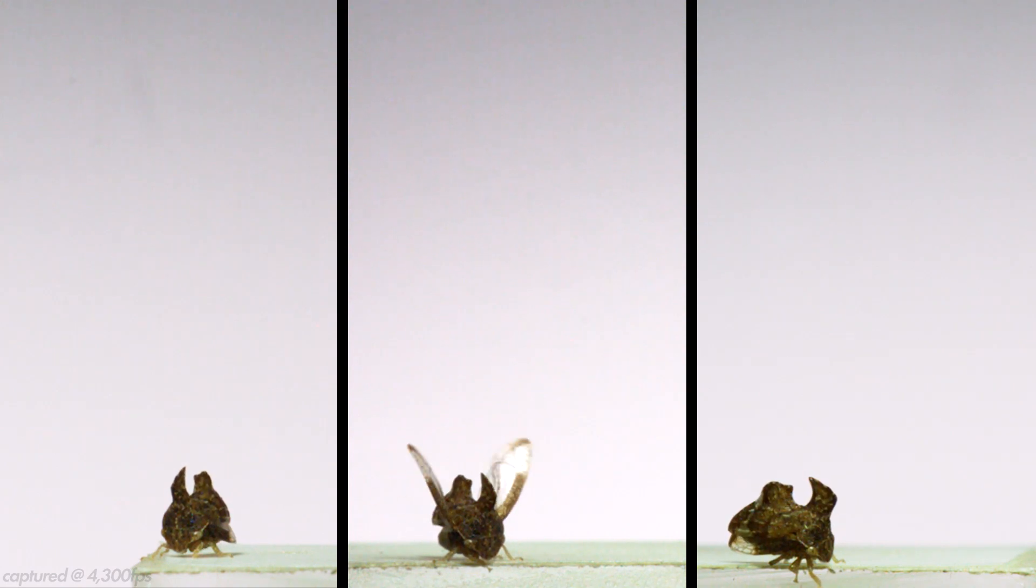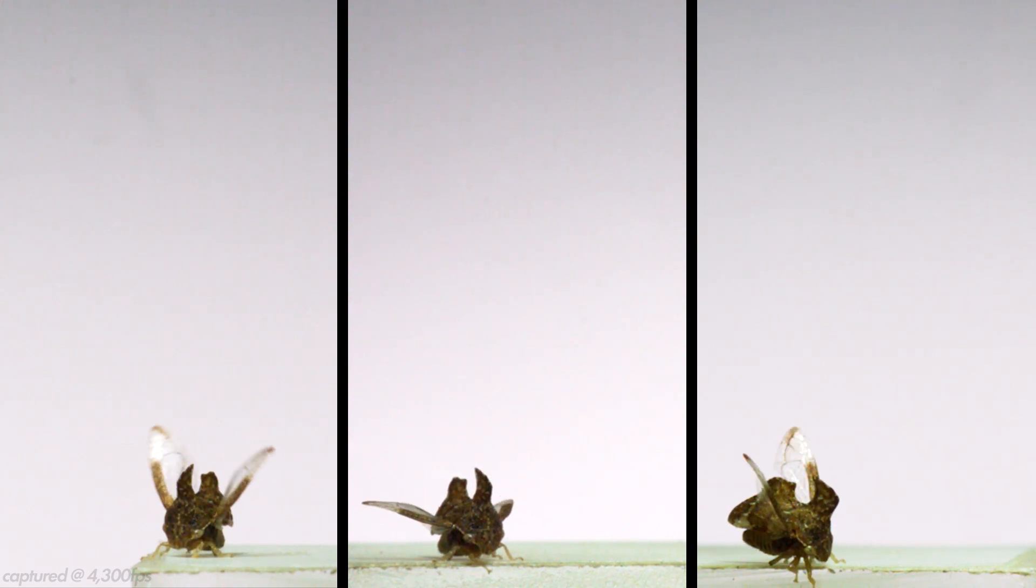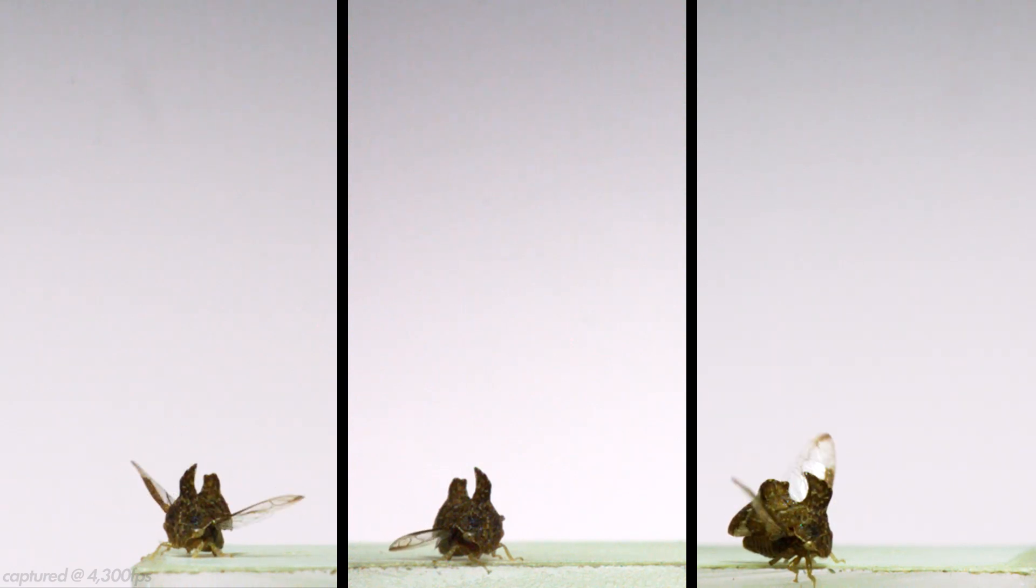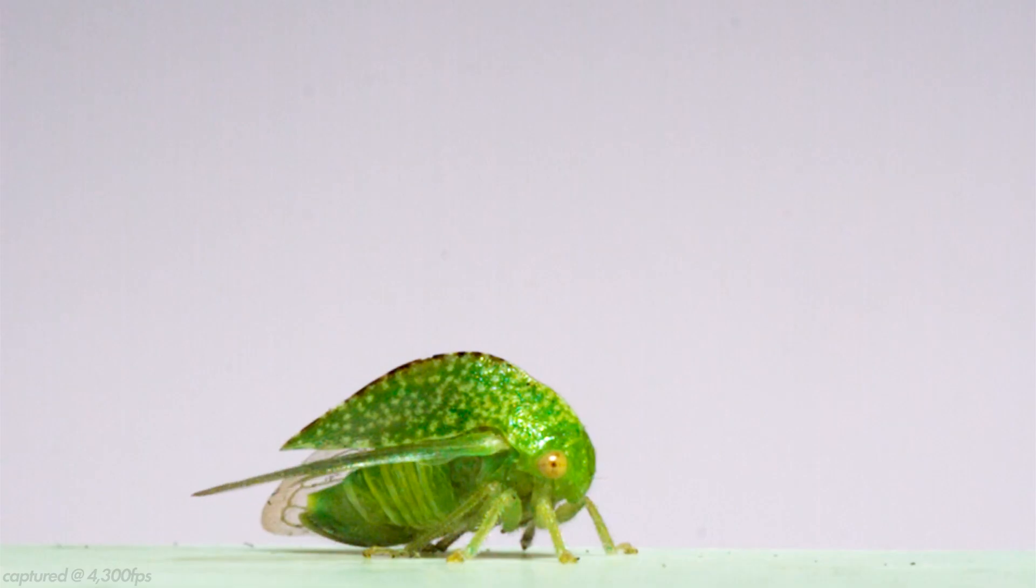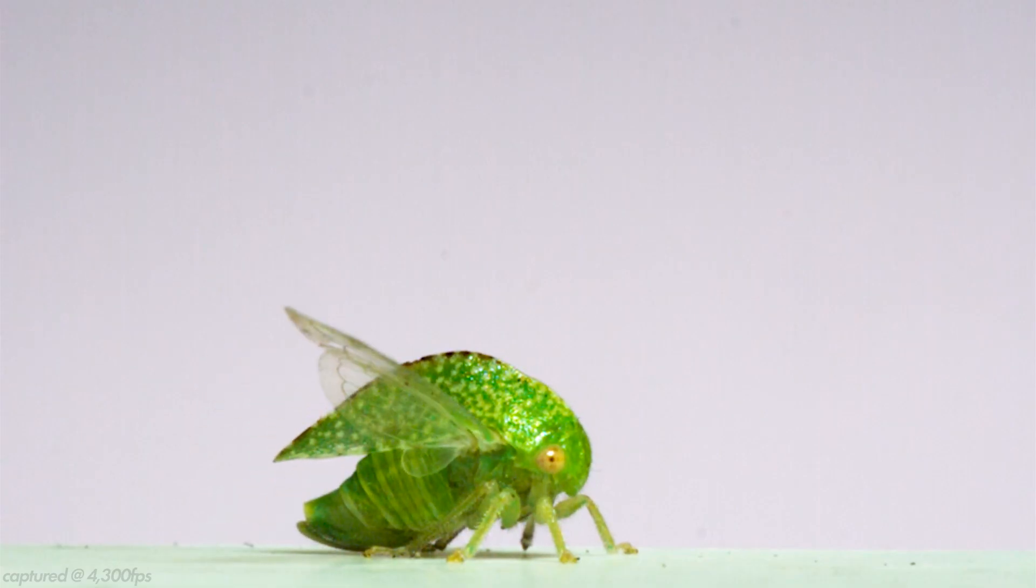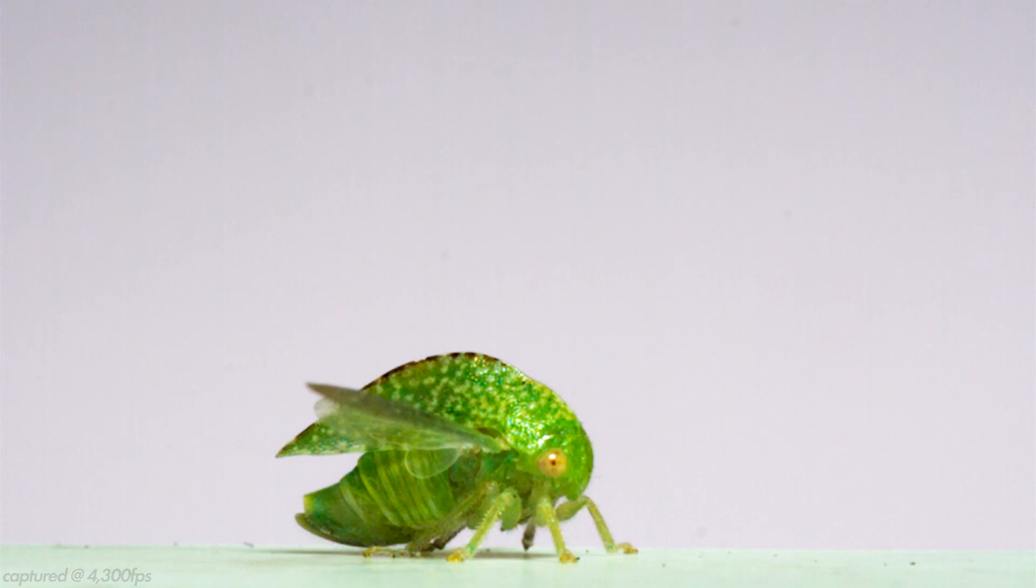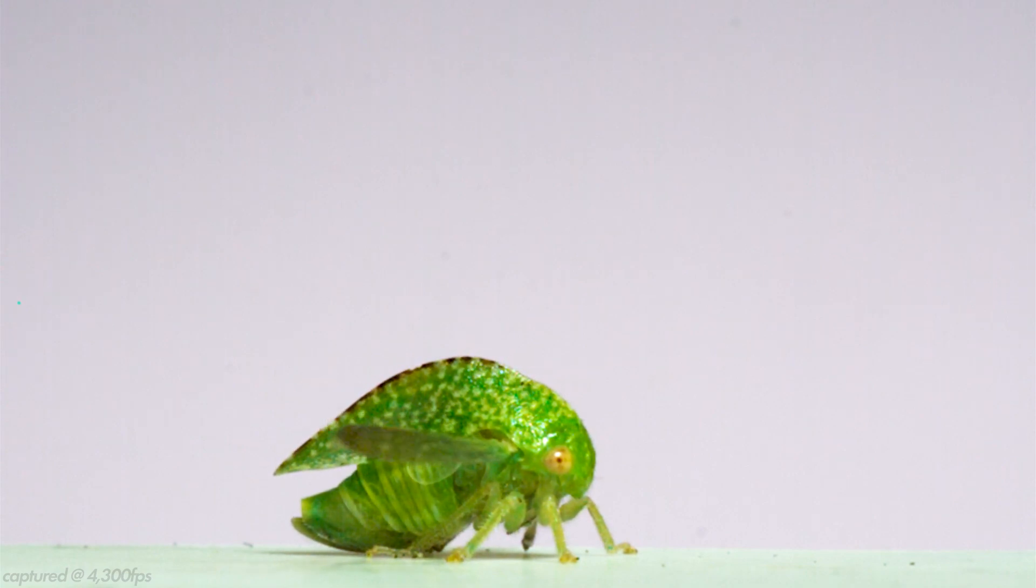With all the treehoppers I filmed, their jumps are preceded by a bunch of wing flapping. They don't ever lift off the ground using their wings. Instead, they kind of flap and warm them up, hold them out, and then once they've launched themselves off the ground, their wings kick in for flight. When Burrows described their jumps, he found that they can accelerate at up to 2,400 meters per second squared, which is over twice as fast as the best performing long-legged leafhoppers.